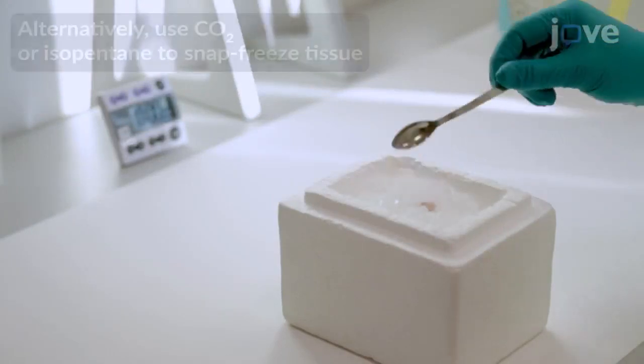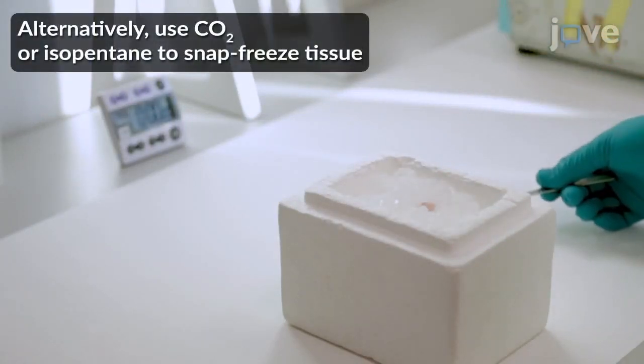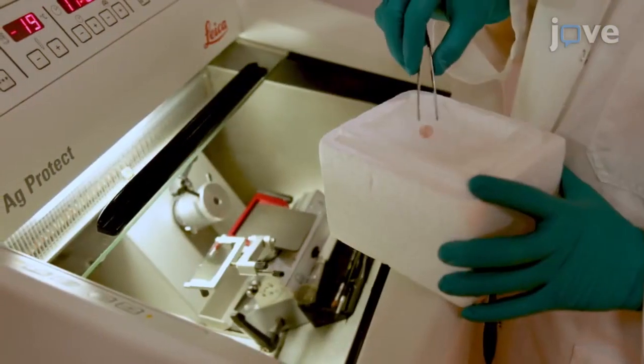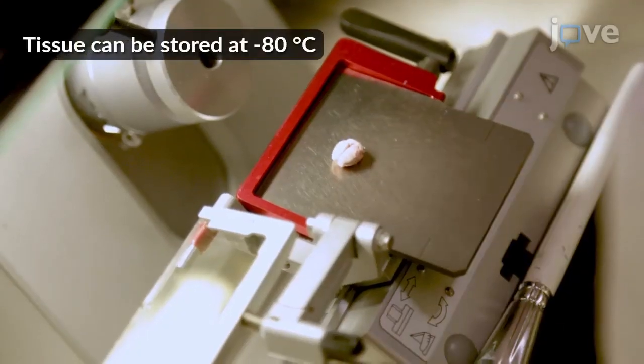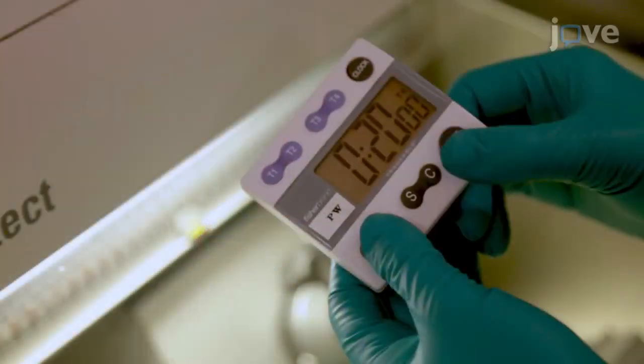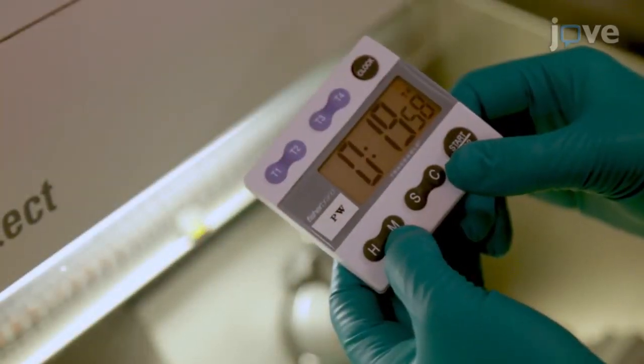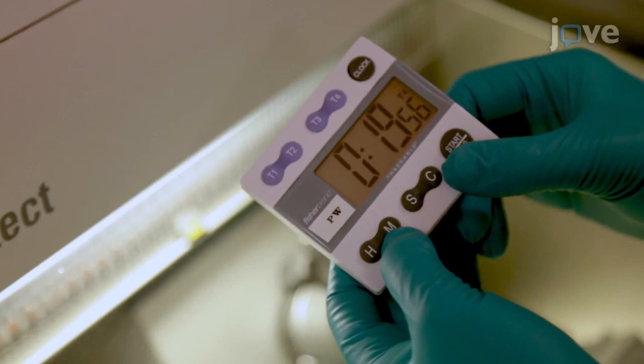To begin, submerge the tissue in powdered dry ice to snap-freeze it. Transfer the frozen tissue directly to a cryostat that is set to minus 20 degrees Celsius. Let the tissue acclimate to minus 20 degrees Celsius in the cryostat for 20 minutes.